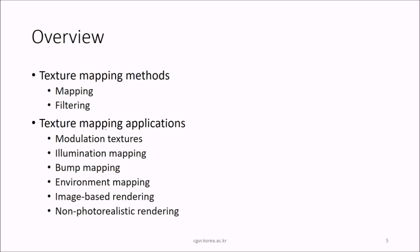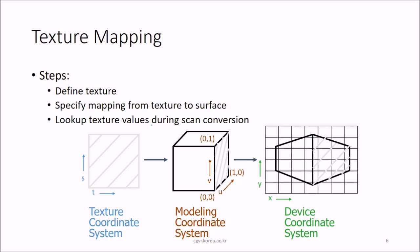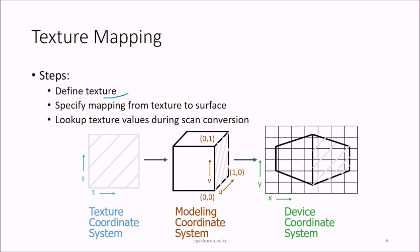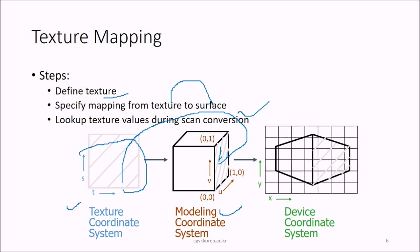We'll see texture mapping methods like mapping, filtering, and texture mapping applications. The steps in texture mapping are: first, we define the texture; then we specify the mapping from texture to surface; and then we look up texture values during the scan conversion. The texture coordinate system is TS, the modeling coordinate system is UV, and the device coordinate system is XY. When you place the texture coordinate system onto the modeling coordinate system, this is how it is seen in the device coordinate system.